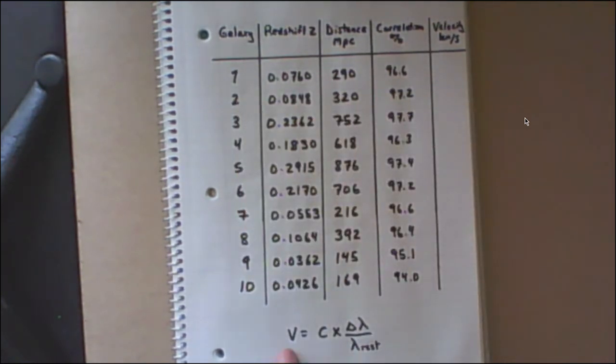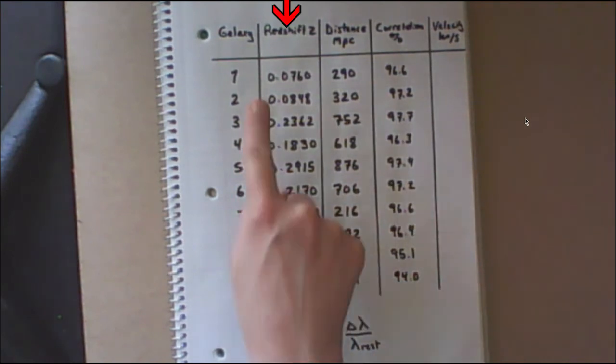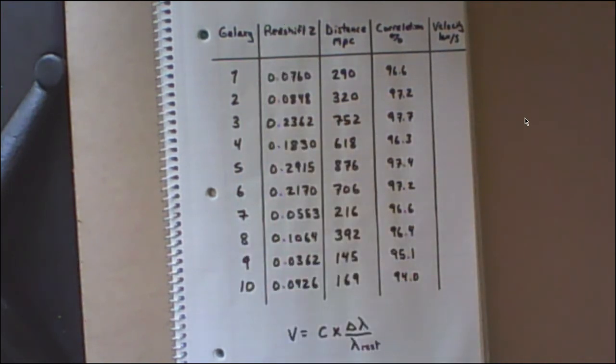We're going to calculate the velocity that each of these individual galaxies is moving away from us. So to get the velocity, you're going to use this equation and your red shift, and the lab manual explains how you use these numbers and this formula to get these numbers here.